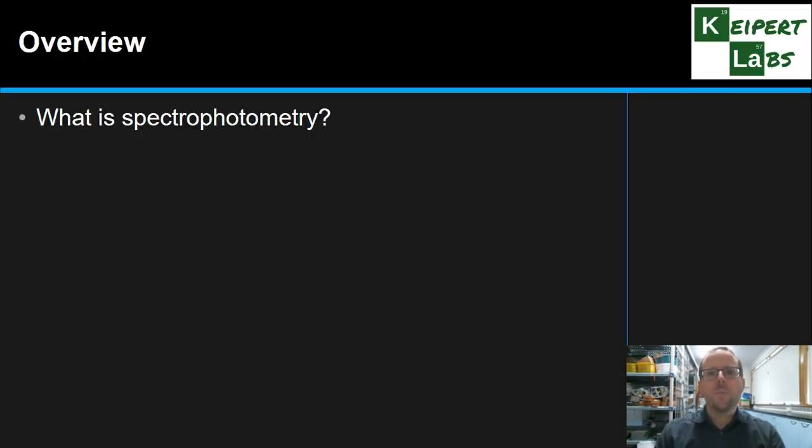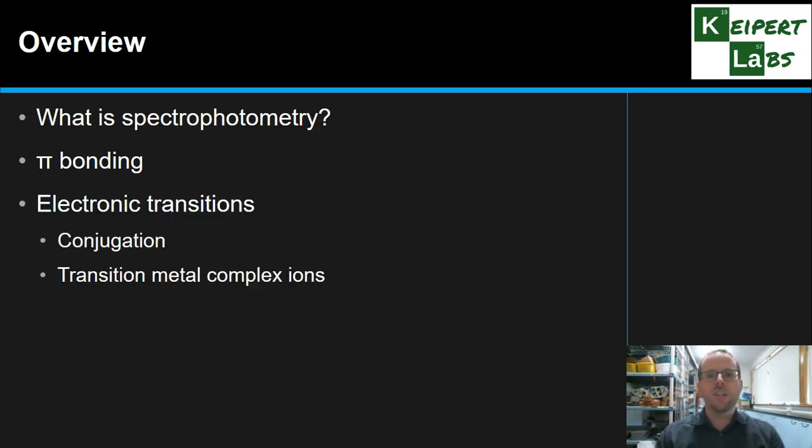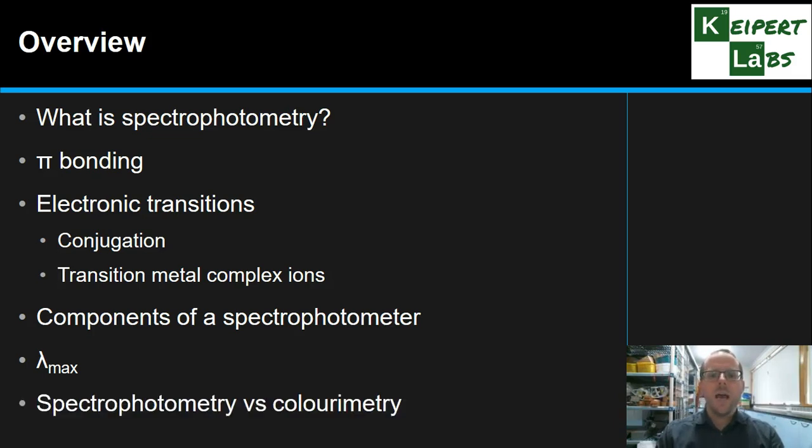We're going to start off by looking at what is spectrophotometry as a technique. We're then going to spend some time looking at the scientific ideas that underpin this technique, so concepts we call pi bonding, looking at electronic transitions within a molecule, looking at a concept called conjugation, and focusing on transition metal complex ions as well. We're then going to look at actual instruments and look at the components of a spectrophotometer. We're going to look at the maximum absorbed wavelength called lambda max, and then compare spectrophotometry and colorimetry.